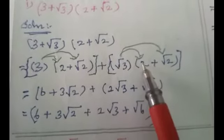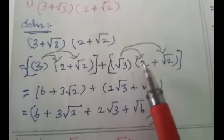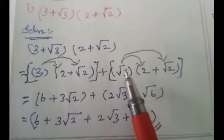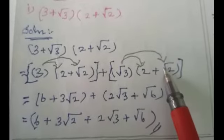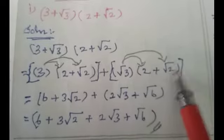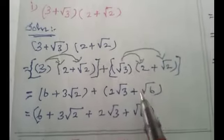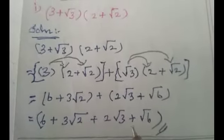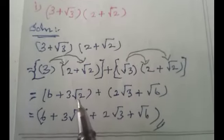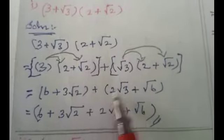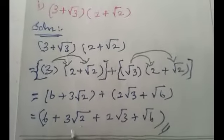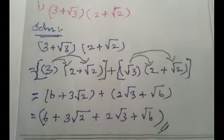Next, √3 × 2: this is a root number times a non-root number, giving 2√3. And √3 × √2: there are two root numbers, so we multiply the numbers under the root — 3 × 2 = 6 — giving √6. So the final answer is 6 + 3√2 + 2√3 + √6. We cannot simplify further.